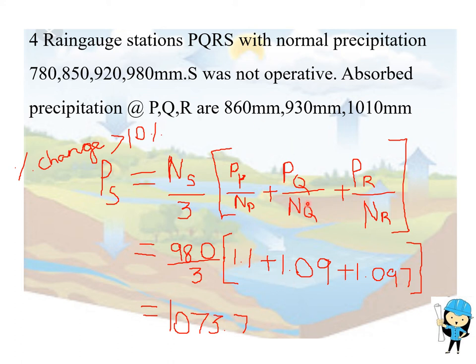Calculating: 980 divided by 3 times [1.1 + 1.09 + 1.09] equals 1073.7mm. Now the observed precipitation at station S is 1073.7mm.